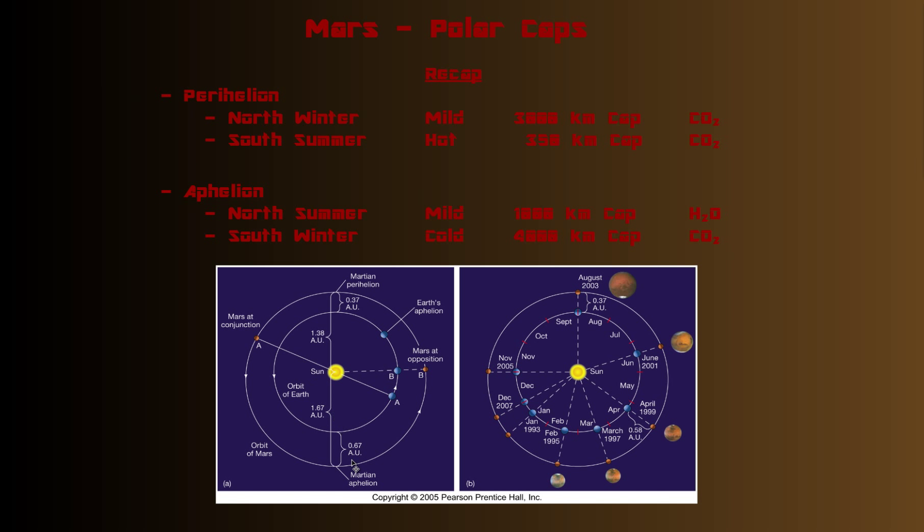In aphelion, when Mars is farthest from the sun, then the southern winter is cold. Notice the seasons switch. North is the winter at perihelion. North is the summer at aphelion. South is the summer at perihelion. South is the winter at aphelion. So since it's farther from the sun at aphelion, it's much colder. You get a nice long, cold winter. And that allows the polar cap to really build up. The CO2 will really collect from the atmosphere and make a polar cap that can be up to 1,000 kilometers larger than the polar cap in the northern winter. The northern summer is mild. It doesn't get too hot like it does in the south because it's farther away from the sun. And so the cap, the northern cap, won't melt as much. It'll only go down from 3,000 to 1,000.